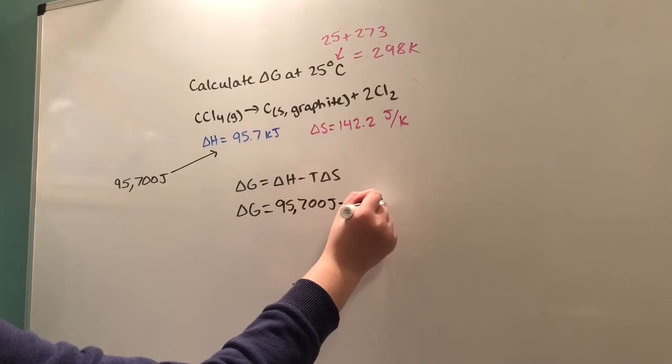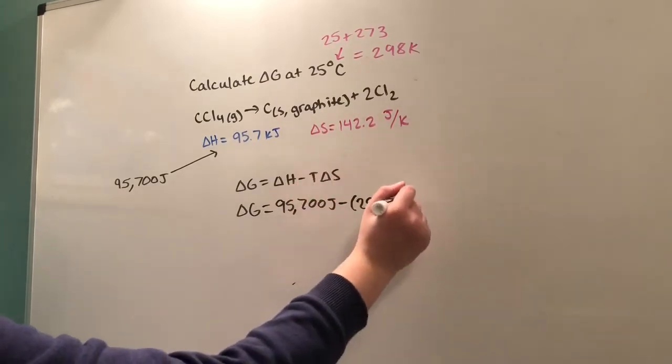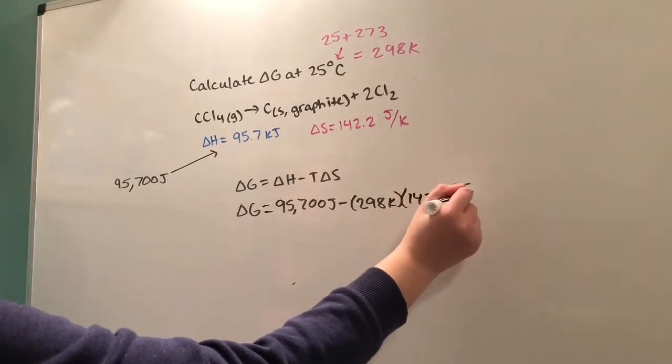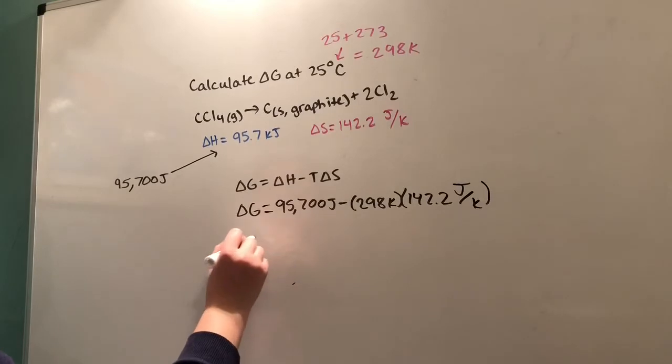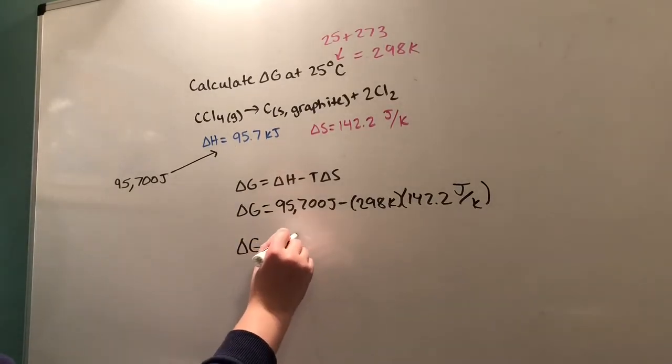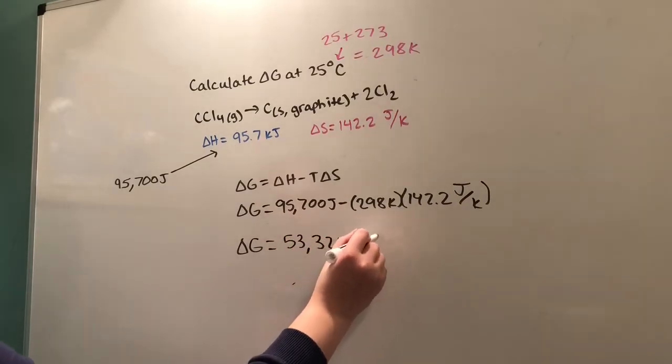multiplied by ΔS, 142.2 joules per Kelvin. Plugging that into our calculator, we get ΔG = 53,324.4 joules.